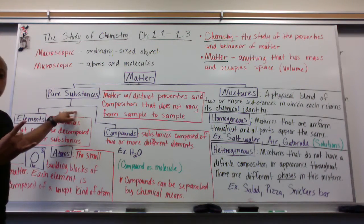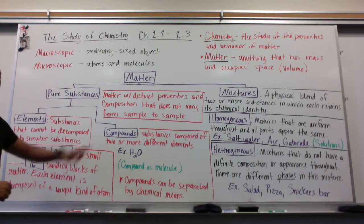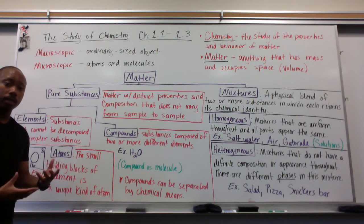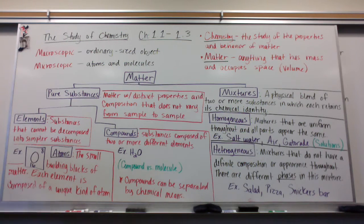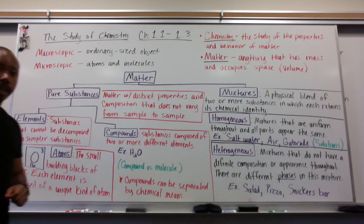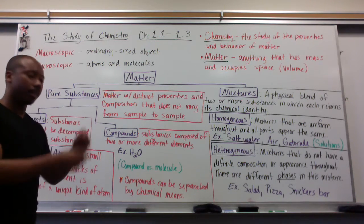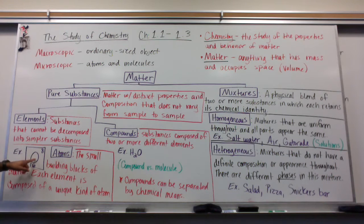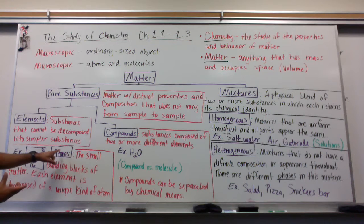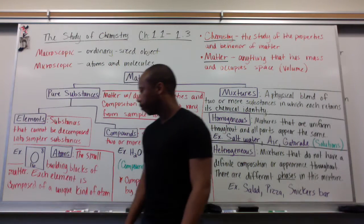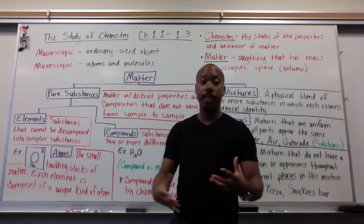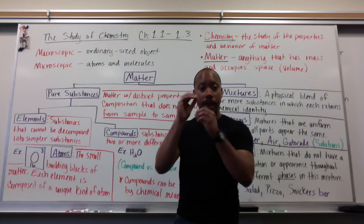Pure substances can be broken down into two categories: elements and compounds. An element is a substance that cannot be decomposed into simpler substances — it is in its simplest form and cannot be broken down further. An example of an element is oxygen, which you can find on any periodic table. Atoms are the small building blocks of matter, and each element is composed of a unique kind of atom.